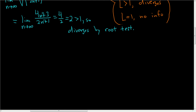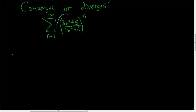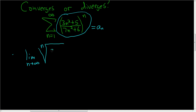Let's do one more. We have the sum as n runs from 1 to infinity of (3n²+5) divided by (7n²+6), all being raised to the nth power. Again, we have something being raised to the nth power, so this is a good candidate for the root test. This whole expression is a sub n, and it's positive so we don't need to worry about the absolute value. We'll take the limit as n approaches infinity of the nth root of (3n²+5) divided by (7n²+6), all raised to the nth power.